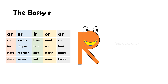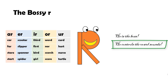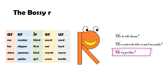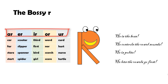The Bossy R — he is the boss. He controls the vowel sounds. He is polite; he lets the vowels go first. When the vowels A, E, I, O, and U are followed by the consonant R, their sound is controlled by the letter R. The R changes the sound that a vowel usually would have made into a completely new sound. Since the R dominates or controls the sound of the vowels, this process is sometimes referred to as the Bossy R or R-controlled vowels.